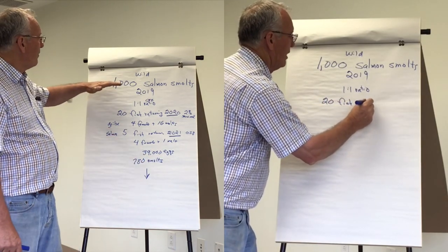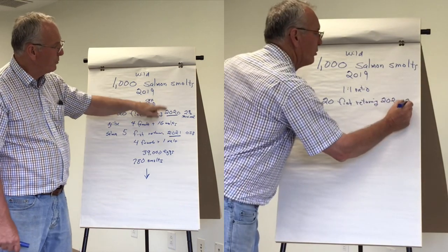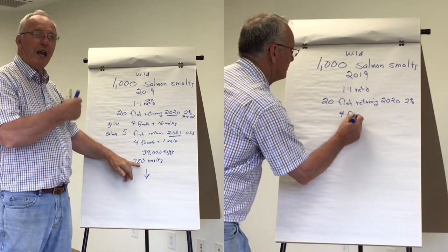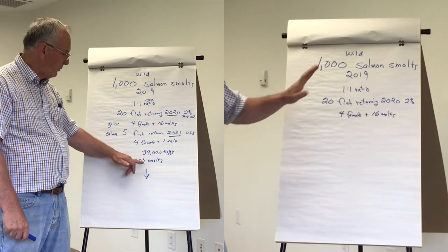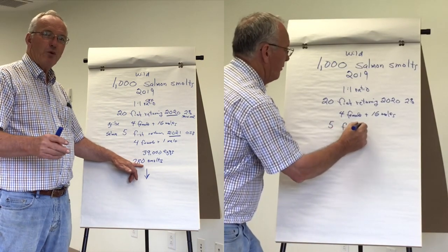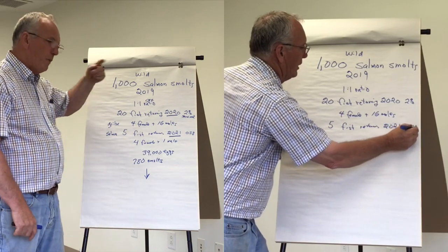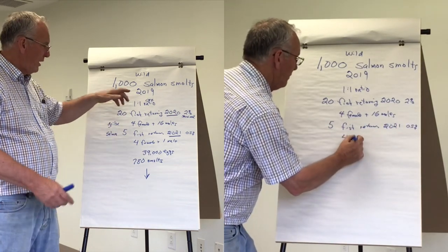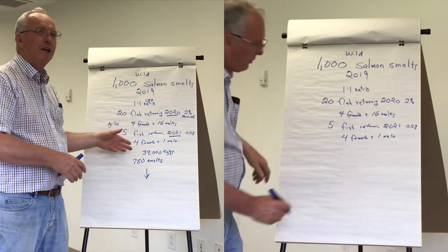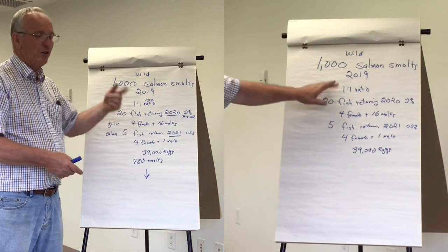So 39,000 eggs through natural survival in the wild would produce about 780 smolts. We have 1,000 smolts going out, and with this poor marine survival that we have now, from the adults and eggs they're going to produce, we're only going to get 780. So what we're having is a declining population. It's spiraling down. The smolts that are going out, we're not going to get enough adults back to keep it at the same rate. It's going down.